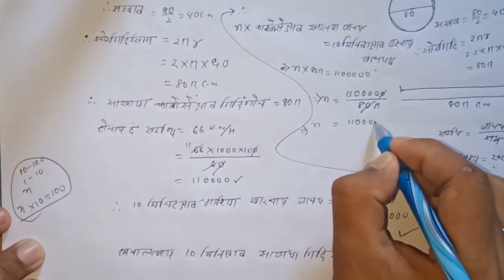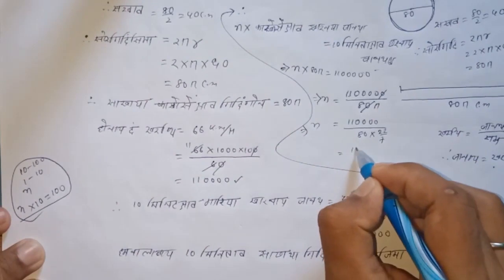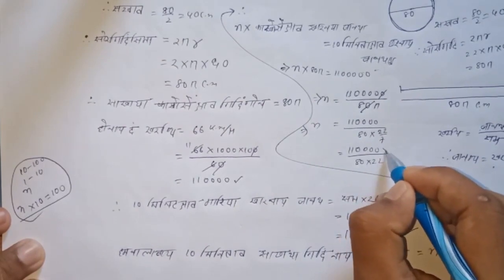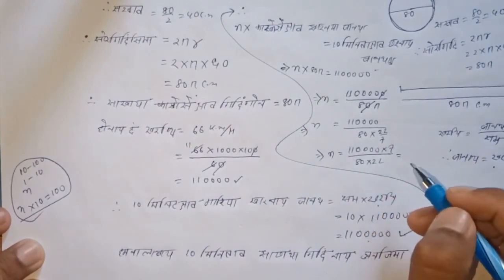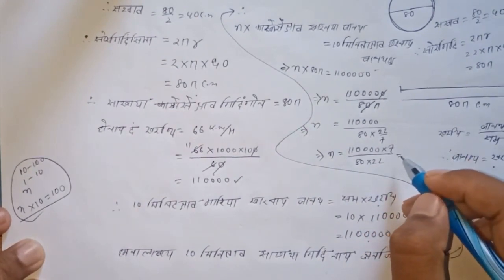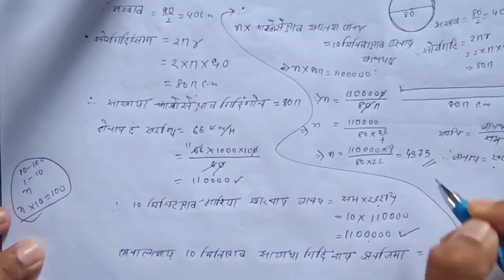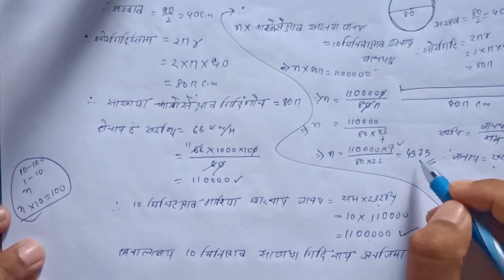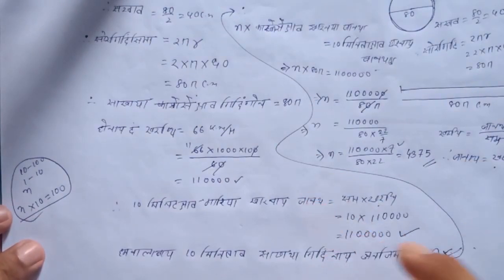8 into π, where π is approximated as 22 by 7, equals 1. Divided by 8 into 22 into 7. The result of this calculation is 4375.